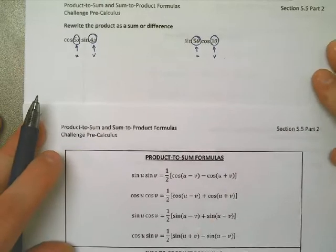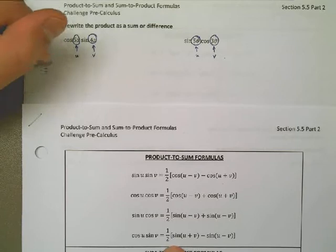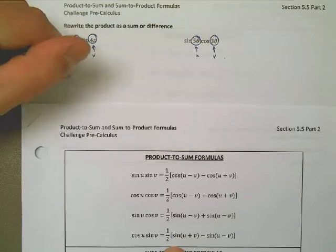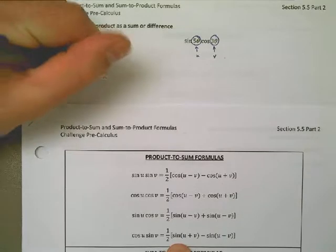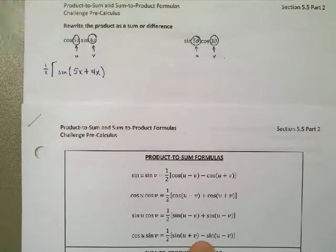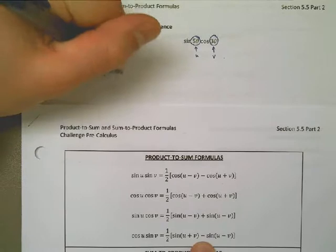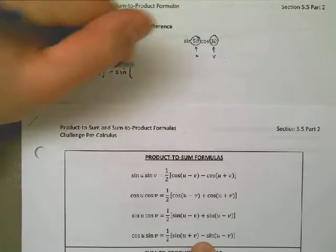So I have one half of, brackets, sine of U, 5X, plus V, which is 4X, in parentheses, minus the sine of U minus V, which is 5X minus 4X.